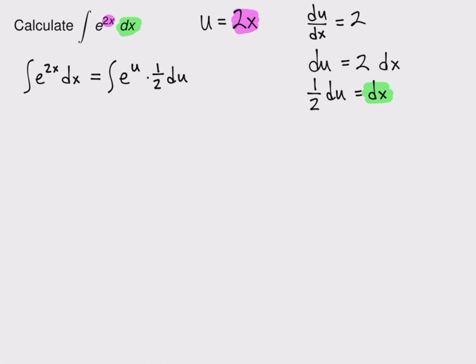Alright, this is good. I've got all u's. Now I know that by the constant multiple rule for integrals, I can pull this constant multiple, the 1/2, out front. And now what I have left, the integral of e to the u du, is an elementary antiderivative. It's something that I can calculate directly.